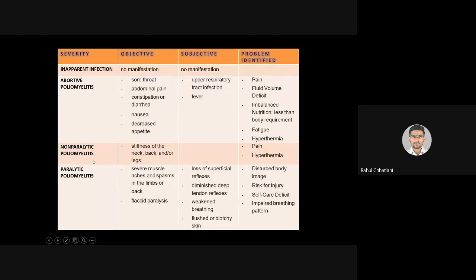Third is non-paralytic poliomyelitis — stiffness of the neck, back, or legs. The spinal cord affects the axial skeleton, so joints near it such as shoulder, hips, neck, and vertebral joints are first affected, causing pain and hyperthermia. Fourth and most severe is paralytic poliomyelitis — as the name suggests, it causes paralysis, severe muscle ache and spasm in the limbs or back, and flaccid paralysis with loss of tone — flaccid hypotonia.